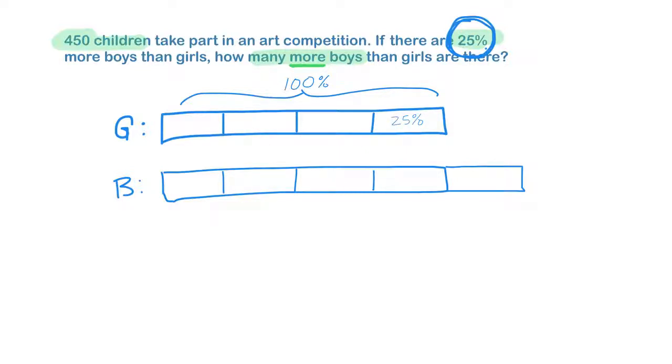Now we can start looking at the number of children. Actually, how many kids do we have total? Well, we have 450 children total. I'm going to write kids because it's faster. And I need to know this. How many is this? This is the extra boys. That's my question mark.